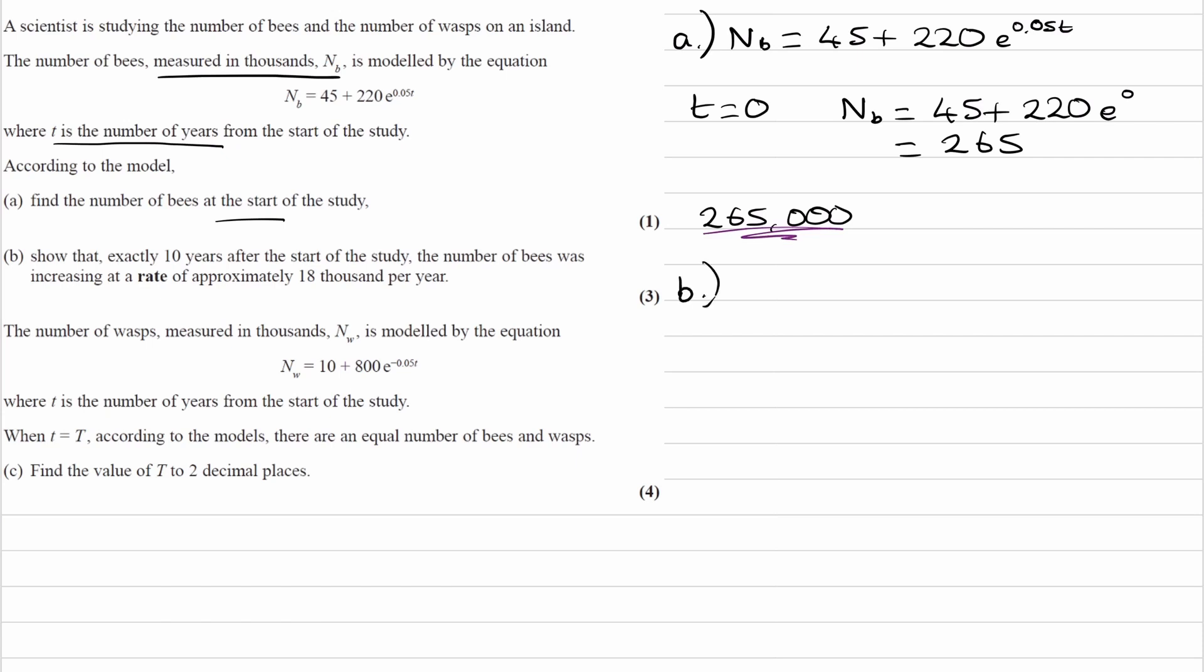Part B. Show that exactly 10 years after the start of the study, so t is 10, the number of bees was increasing at a rate - rate means differentiate - of approximately 18,000 per year. This is a show-that question. We're trying to show that the rate is increasing at 18,000 per year when t is 10. In other words, this needs to be approximately equal to 18.